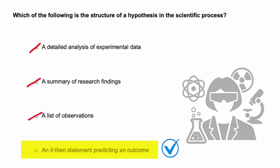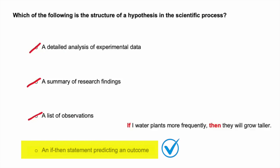The correct answer is an if-then statement predicting an outcome. A hypothesis is a testable prediction, and it's often structured as an if-then statement. For example, if I water my plants more frequently, then they will grow taller. This proposes a testable relationship between two variables. The if clause represents the independent variable, and the then clause predicts the expected outcome or behavior. This structure reflects the purpose of a hypothesis in the scientific process, which is simply to propose a testable prediction that can be evaluated through experimentation.